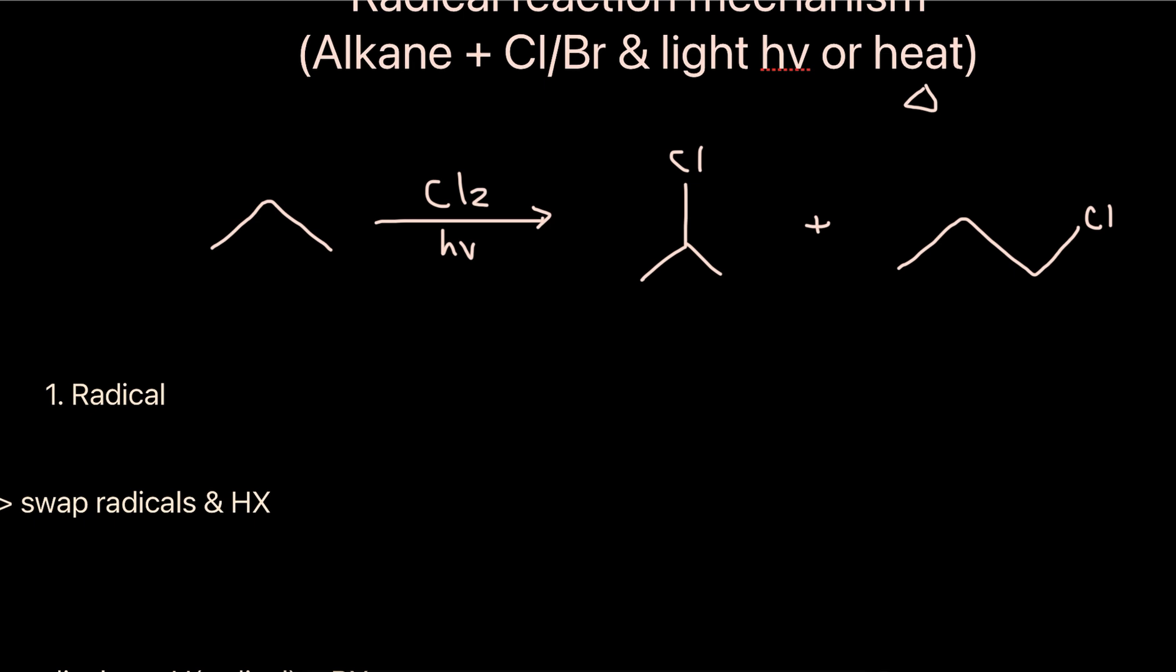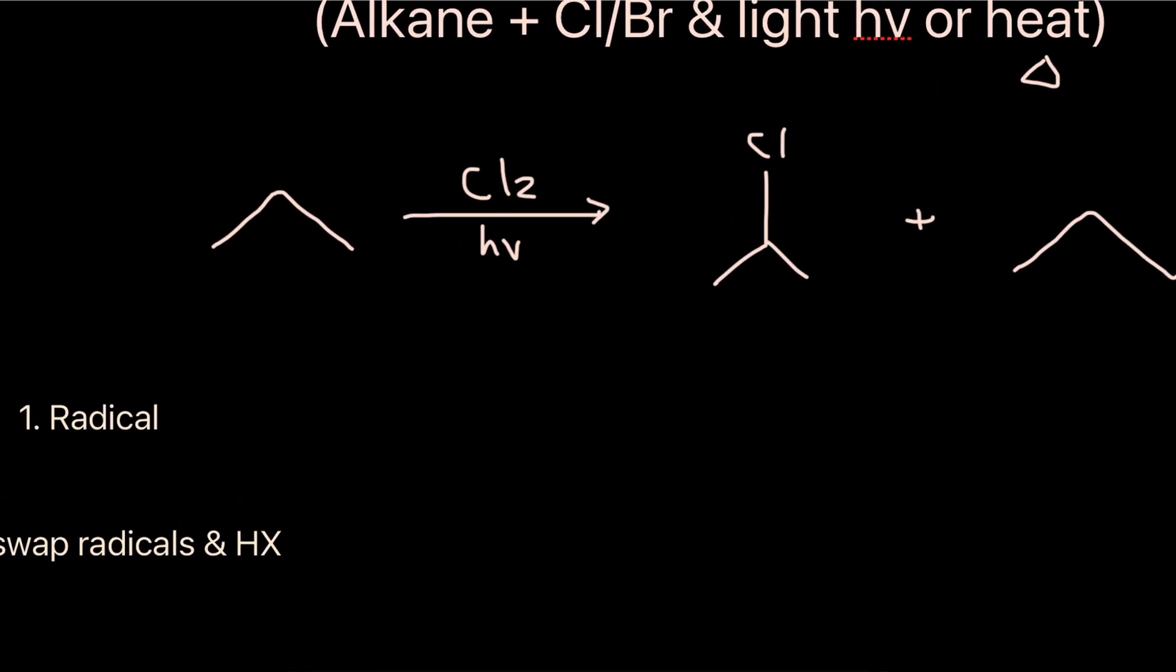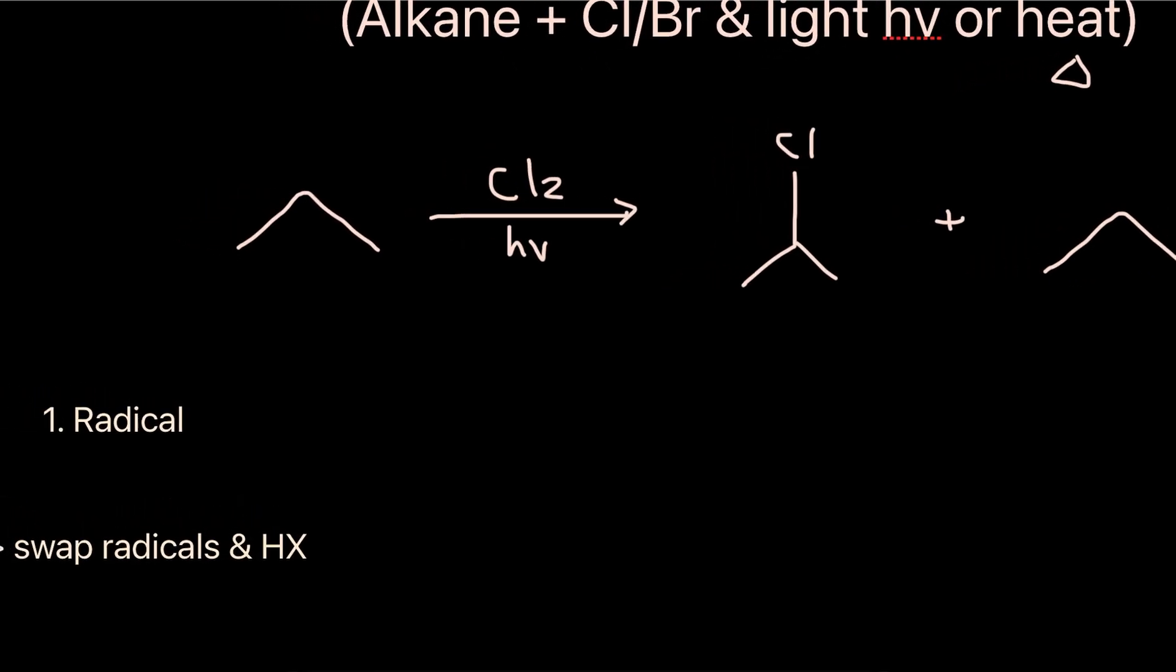So given this formula here, let's write out the mechanisms. The first part is to identify a halogen and then split it into a radical. We will use fish hooks, or half arrows, to indicate that the bond is breaking. And this will give you two chlorine radicals.